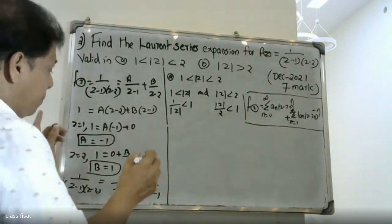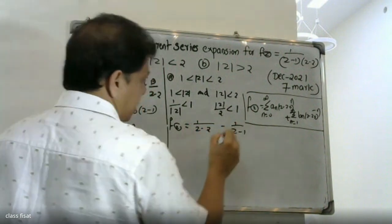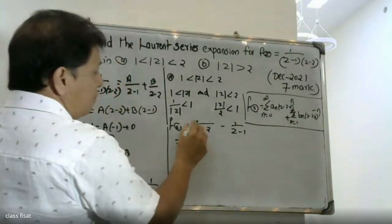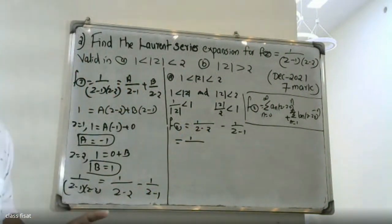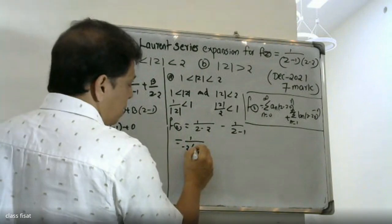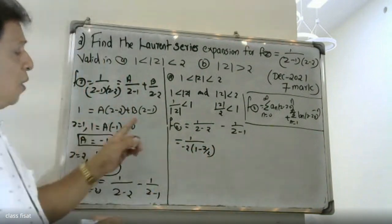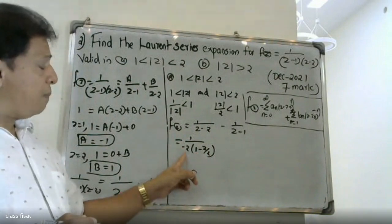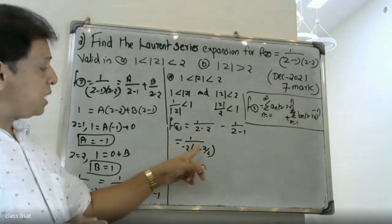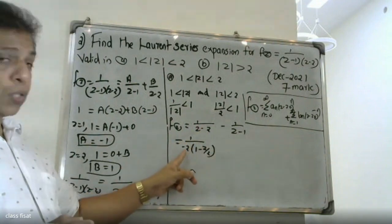For the first region where 1 less than |z| less than 2, we rewrite. For 1 divided by (z minus 2), since |z| less than 2, we have 2 divided by |z| less than 1, so we write it as minus one-half times 1 divided by (1 minus z by 2). For 1 divided by (z minus 1), since |z| greater than 1, we use 1 over z form.